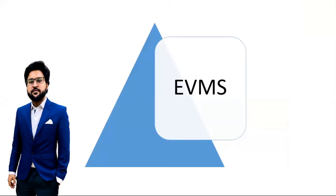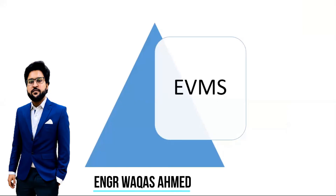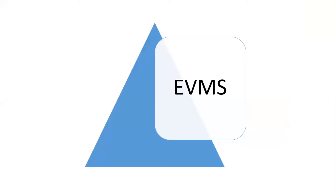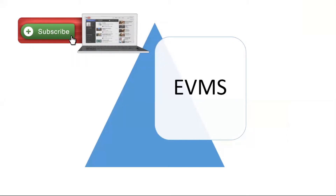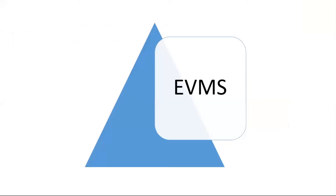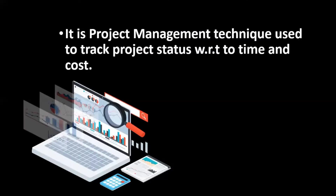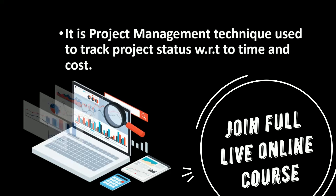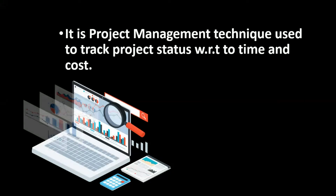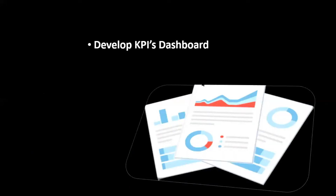EVMS stands for Earned Value Management Systems. We will take a step-by-step approach to understand it in an effective and practical way. Earned Value Management System is a project management technique used to track project status with respect to time and cost. At any point during the execution phase, you apply EVMS to determine the status of your project.